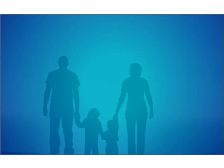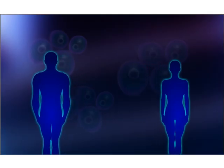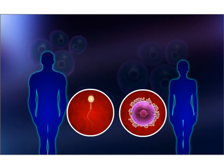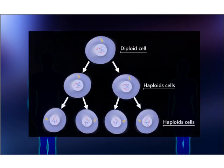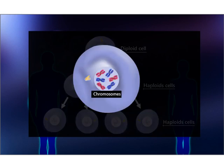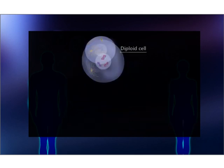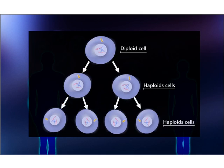Do you know why offspring are not identical to their parents? Let us find out the answer with the process of meiosis, which takes place in reproductive cells. Meiosis is the process by which haploid cells are produced from a diploid cell. The chromosomes must be correctly sorted and distributed to create genetically unique cells with half the number of chromosomes as the original cell.